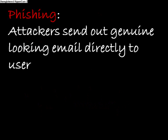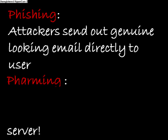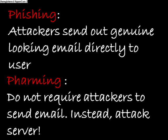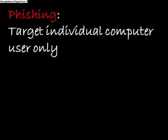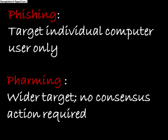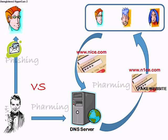In phishing, the attacker sends out legitimate-looking emails appearing to come from some of the web's most popular sites in an effort to obtain personal and financial information from individual recipients. However, farming attacks do not require an attacker to send emails. In phishing, the attacker targets individual computer users one by one, whereas in farming, larger numbers of computer users can be victimised because it is not necessary to target individuals one by one, and no conscious action is required on the part of the victim. Farming is more difficult to detect — instead of relying on users to click a link in a fake email, farming can redirect users to fake websites even if they type the correct website address.